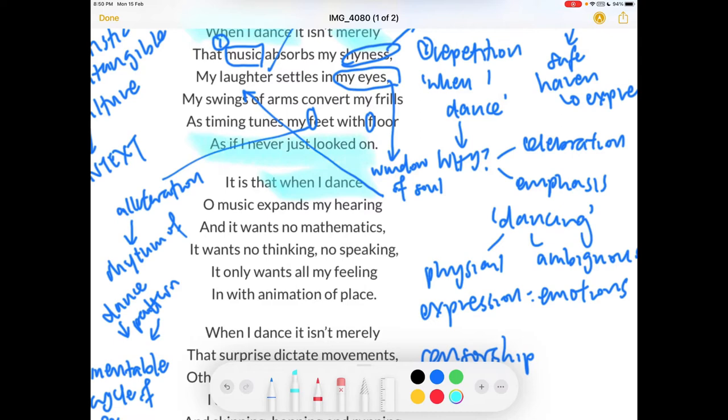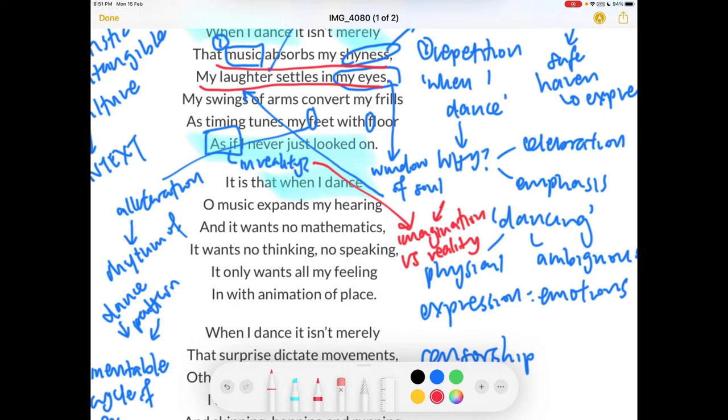Over here, I feel this is quite striking: as if I never just looked on. As if means that in reality, did the person look on? Over here I think we can link it back to the idea of imagination versus reality. How much of this poem of dancing is imagination and how much of it is reality? This is perhaps another theme that you would like to look at. Especially the imagination in music settling in eyes, laughter settling in my eyes, music absorbing my shyness. A lot of these things are very intangible. It cannot be seen or rather it cannot be felt, like it cannot be touched. You can't really quantify it. So if you can't really quantify it, do you consider that a figment of your imagination?